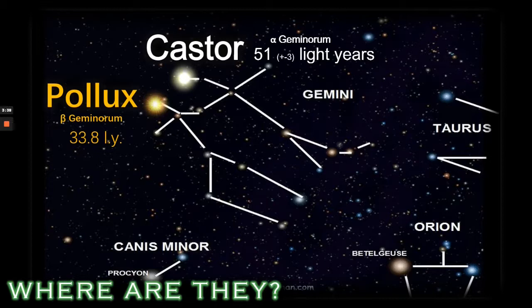The first thing to realize is that these two stars, although they are the Gemini twins, are not actually next to each other. Pollux is 33 light years away and Castor 51 plus or minus another three light years distant from our own Sun.